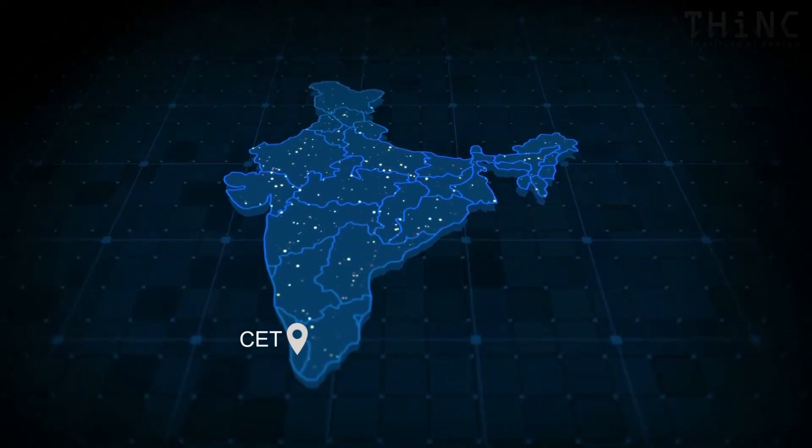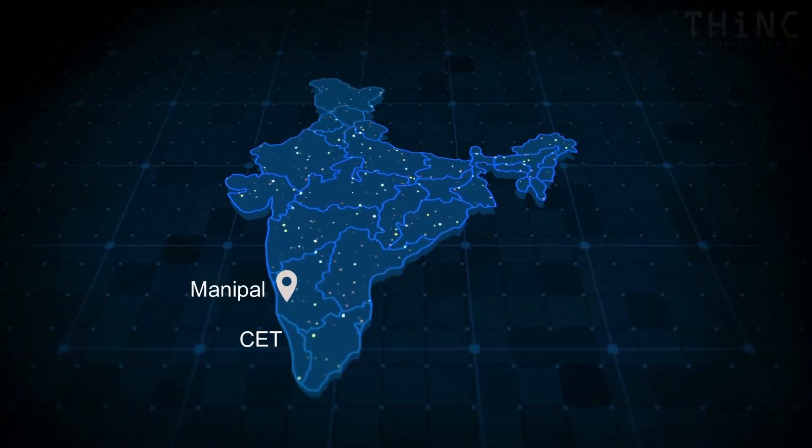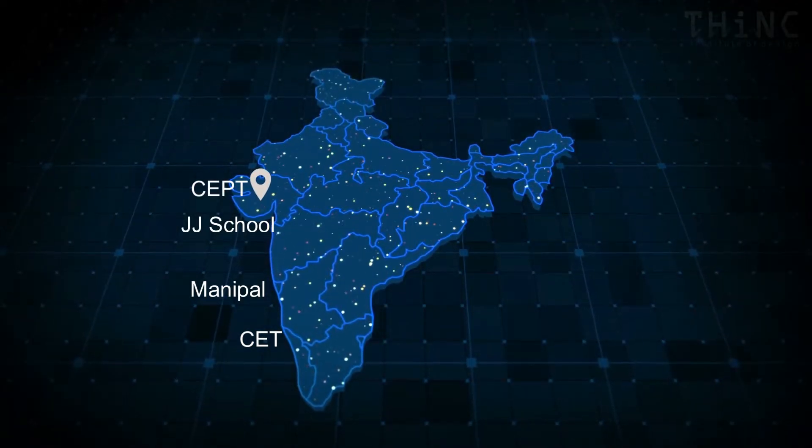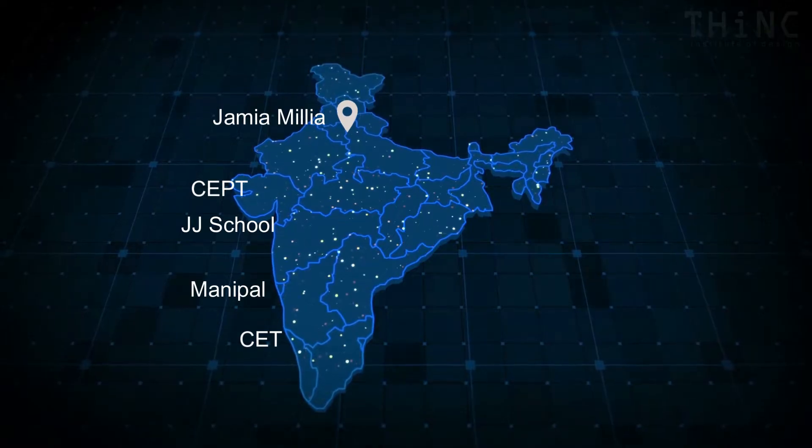These institutes are spread across India. CET in Kerala, Manipal School of Architecture in Karnataka, Sir J.J. School of Architecture in Maharashtra, CEPT University in Ahmedabad, Jamia Millia in New Delhi.